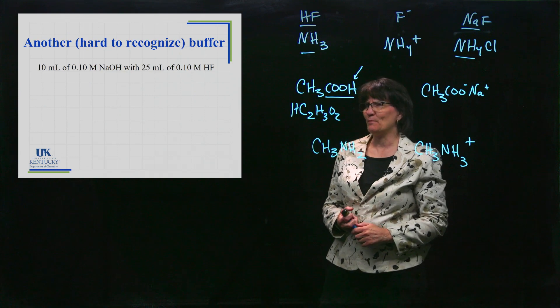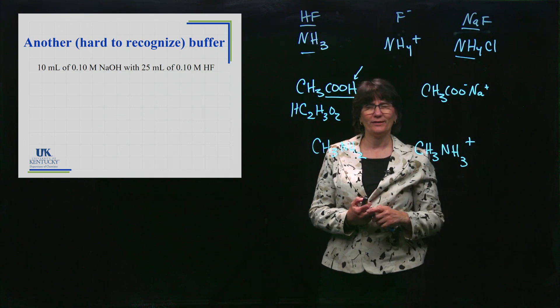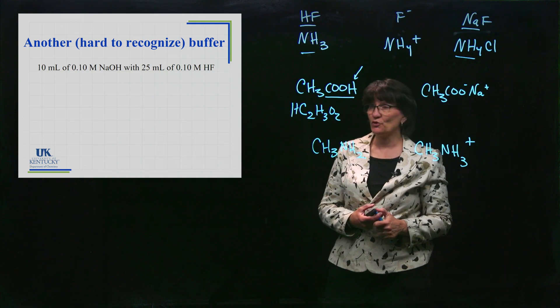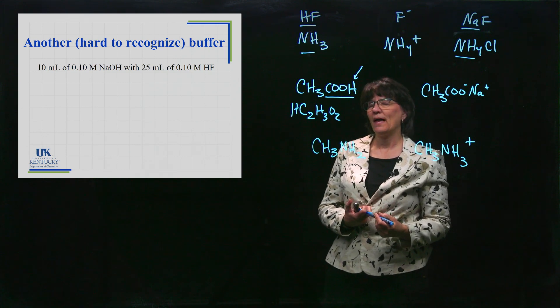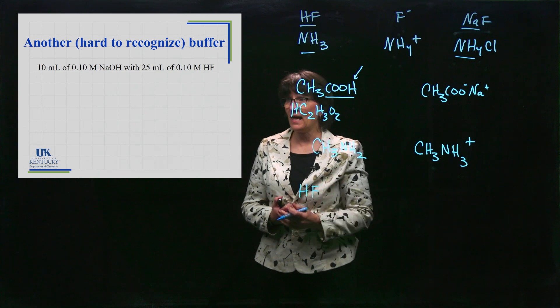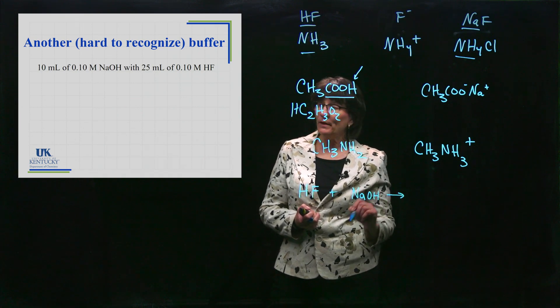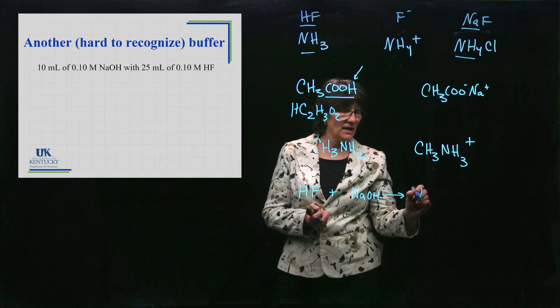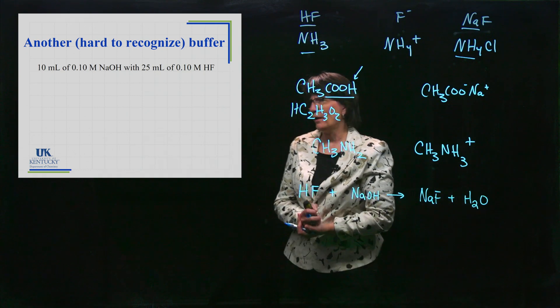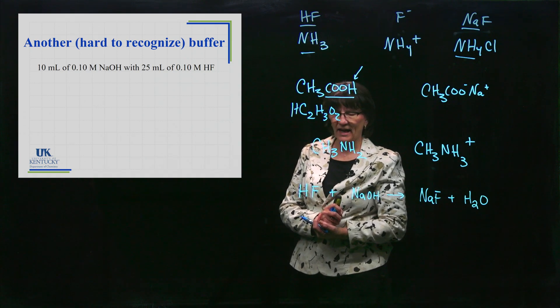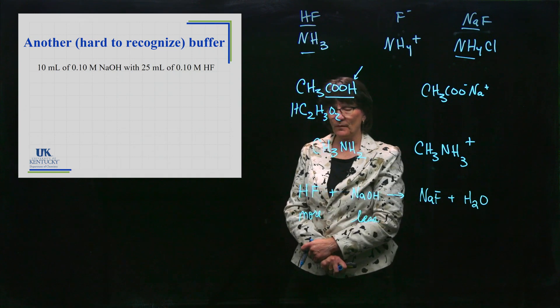This is a very hard to recognize buffer and it will become more evident as we proceed through these lessons and start talking about something called a titration. Let's see how in the world this could be a buffer. First of all, we've got sodium hydroxide and HF. I'm gonna write HF - it's an acid. Sodium hydroxide - that's a base. When they react they will do the neutralization reaction: acid plus base gives you salt plus water. Look at the quantities - which one do I have more of? I have more of the HF, so I have more of this and I have less of this. This is important for it to be a buffer.